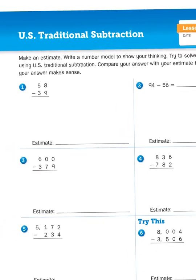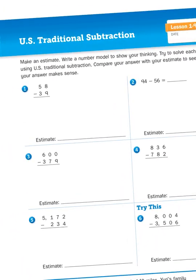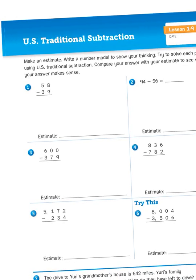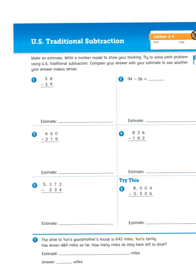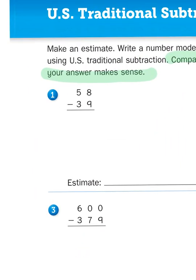Let's take a look at these instructions. Make an estimate. Write a number model to show your thinking. Try to solve each problem using U.S. traditional subtraction. Compare your answer with your estimate to see whether your answer makes sense. Now, I am going to highlight that last bit of instructions. That's going to come in handy when we get to the actual problem.